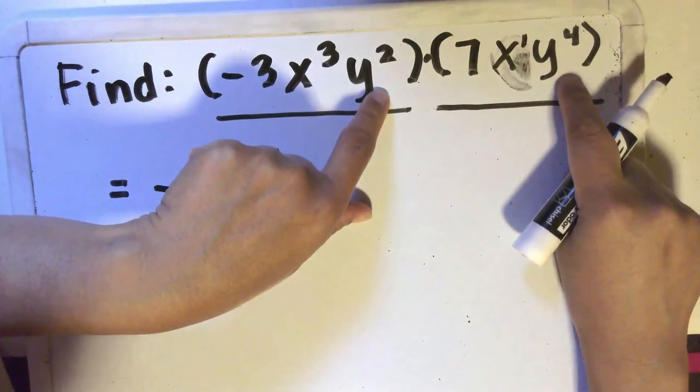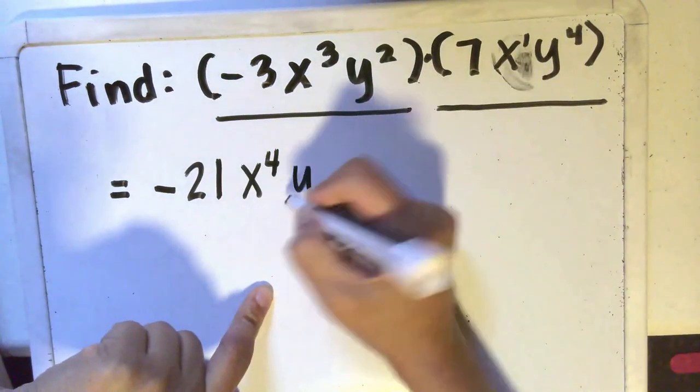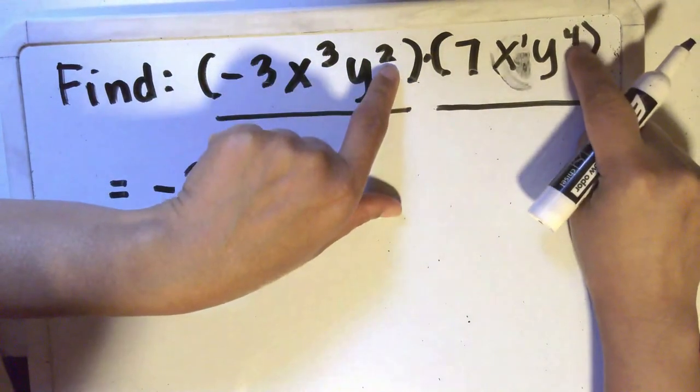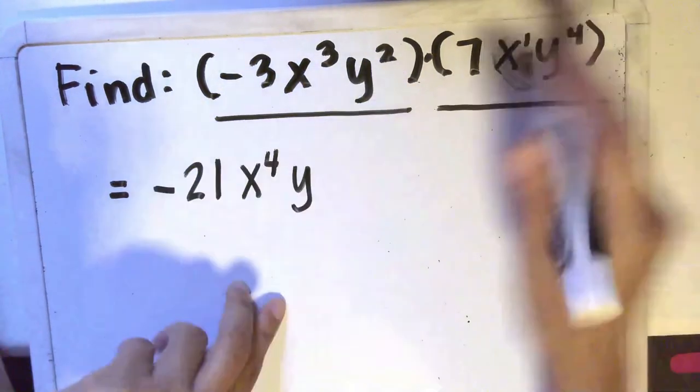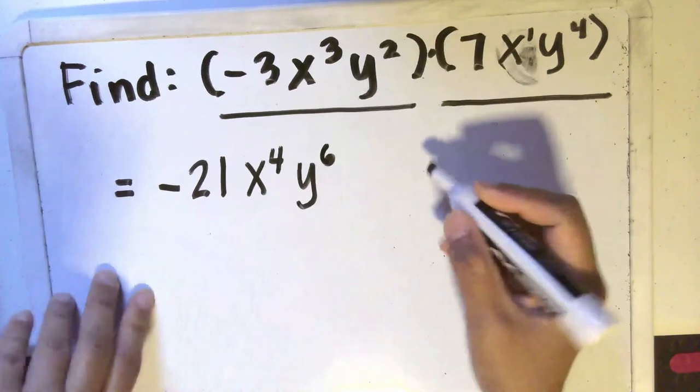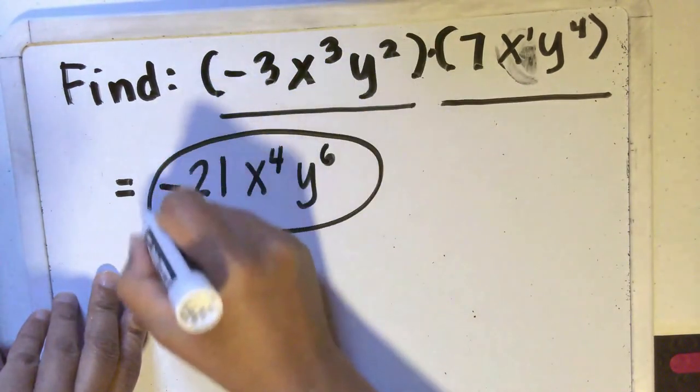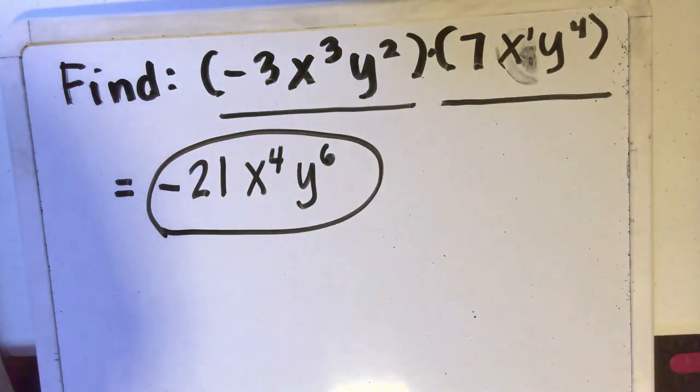And here, y squared times y to the fourth. Same thing. Copy the base, which is y, and add the exponents, which are 2 and 4, so you'll have 6. So the final answer is negative 21x to the fourth y to the sixth power.